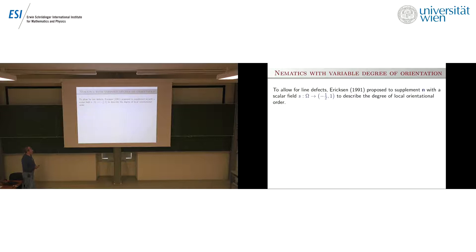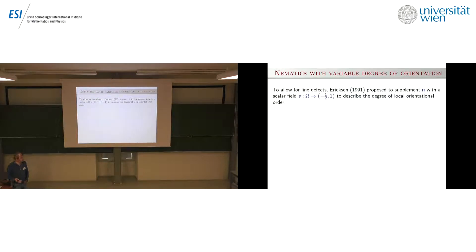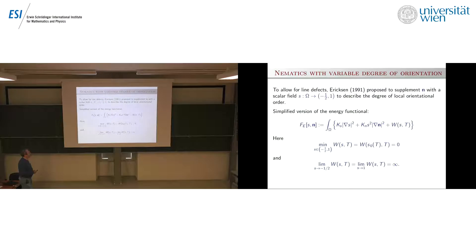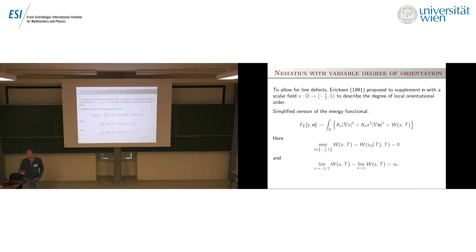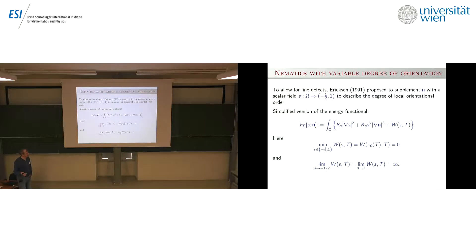Let me consider the first generalization: you're still dealing with a director, but you also have an additional scalar parameter s. You have s, which tells you the quality of orientational order at a given point, and n, which gives the preferred orientation. One way to think about this is to consider the vector field s times n, which is no longer constrained to unit length — that rigidity actually causes the energy to be infinite when working with unit vector fields.